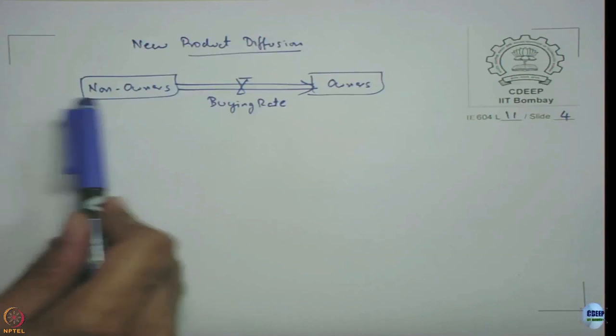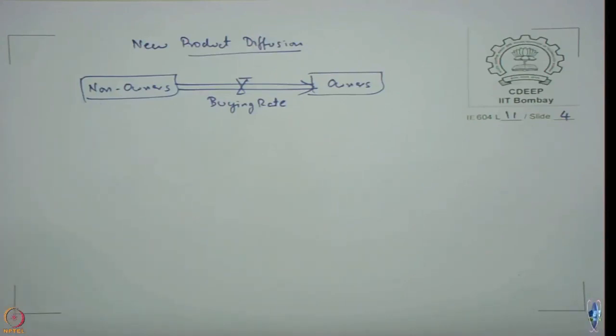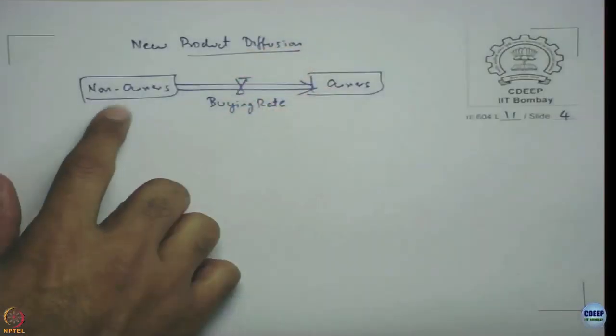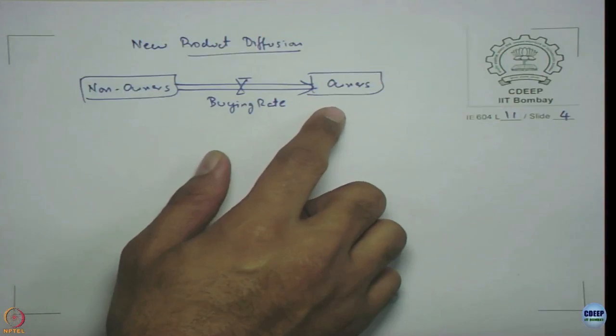As you can observe there is no inflow into the non owners right that means non owners is fixed whatever the initial value is there only thing it is get affected is the buying rate. Non owners should keep reducing as long as the buying rate is positive as every period as long as people are buying it those many non owners are going to get converted into owners.